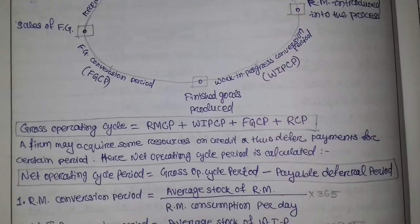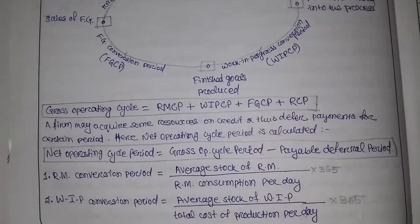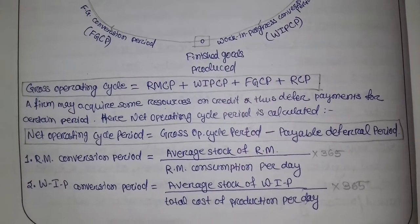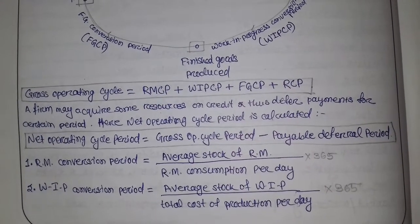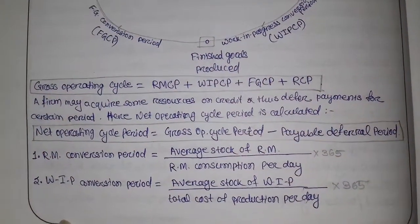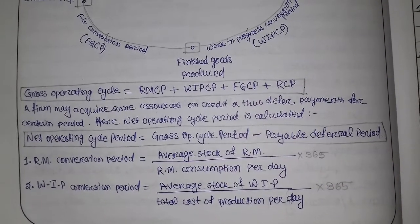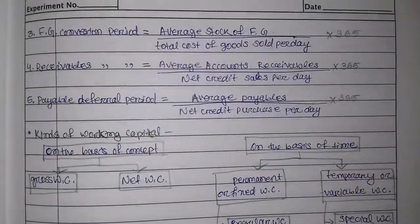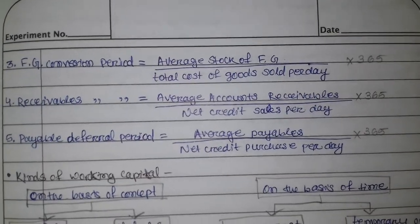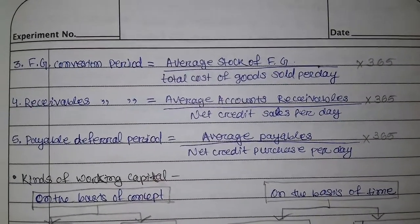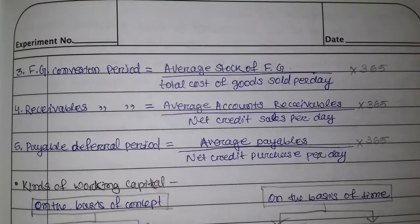Various formulas: gross operating cycle and net operating cycle period. Gross operating cycle equals raw material conversion period plus work-in-progress conversion period plus finished goods conversion period plus receivable conversion period. Net operating cycle period — note down this important formula. Also note the finished goods conversion period formula, receivable conversion period formula, and payable deferral period formula. Please remember these. Thank you so much for watching; please share the video and subscribe to my channel.